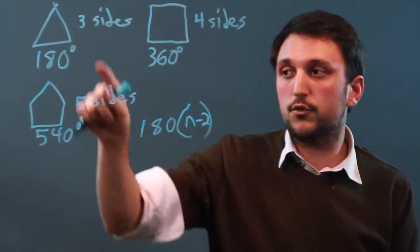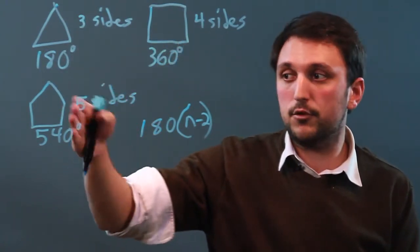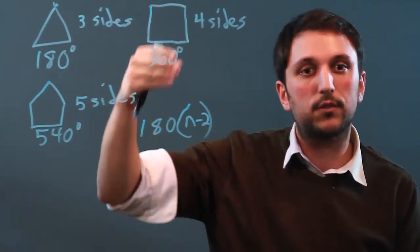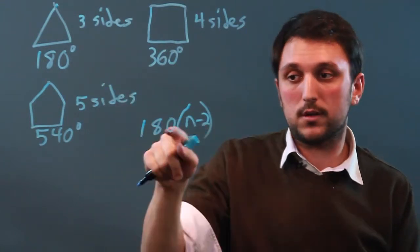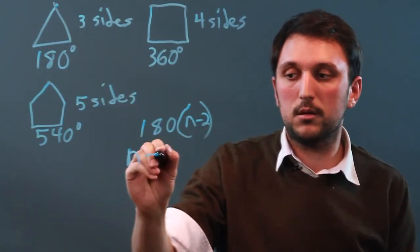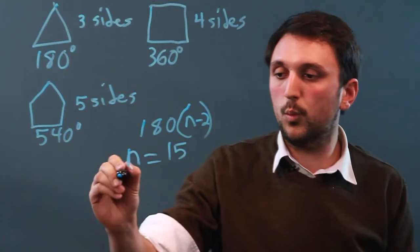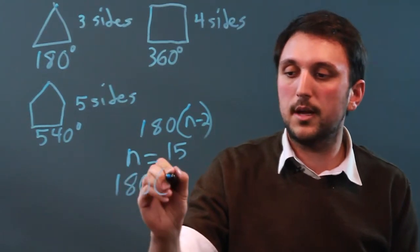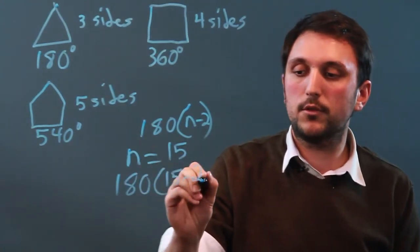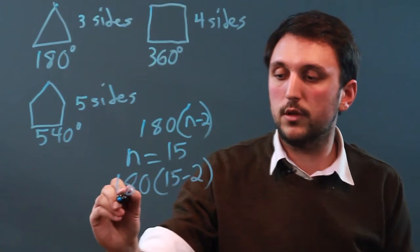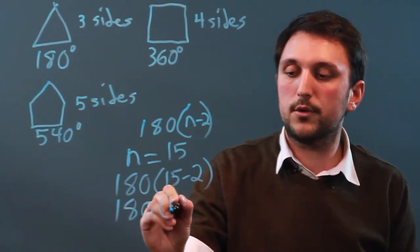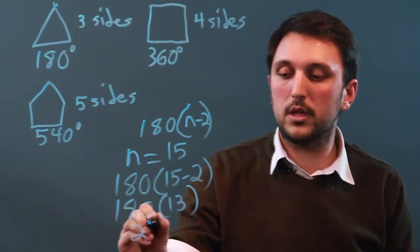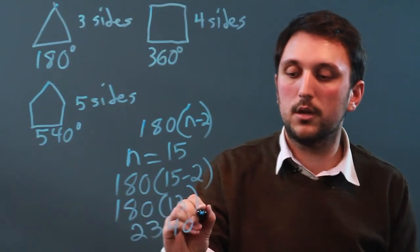Instead of drawing out all 15-sided shapes, the 6 side, the 7 side, the 8 side, we're just going to say n equals 15. So 180 times 15 minus 2, which is 180 times 13, which is 2340 degrees.